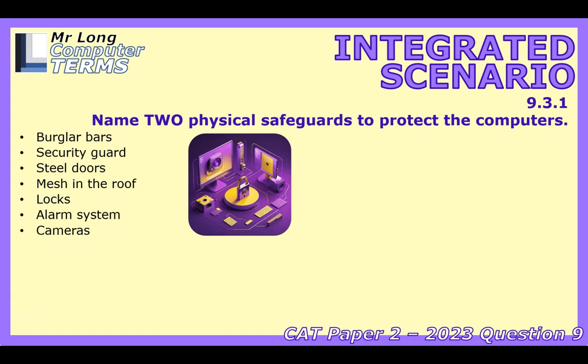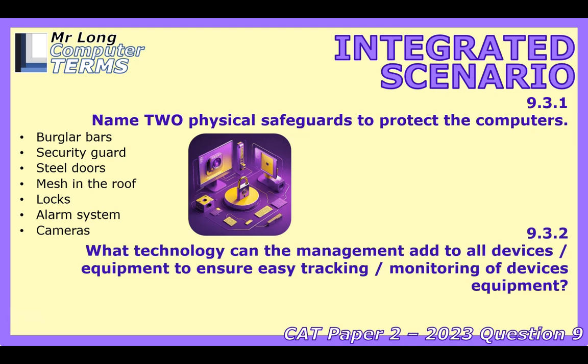Question 9.3.2: what tech could they use for easy tracking or monitoring of equipment? Options include RFID tags, barcode or QR code stickers, or Bluetooth tracking devices. With barcodes or QR codes, you stick a unique label on every item — PC, monitor, keyboard — and use a scanner or phone app to quickly scan codes for inventory checks and logging items in or out. It's a low-cost way to keep track of all assets — like a library system for computer parts.